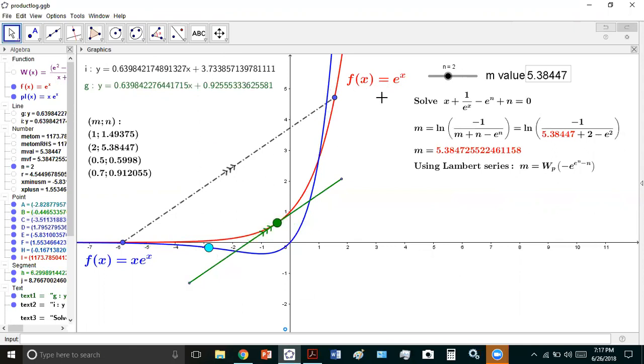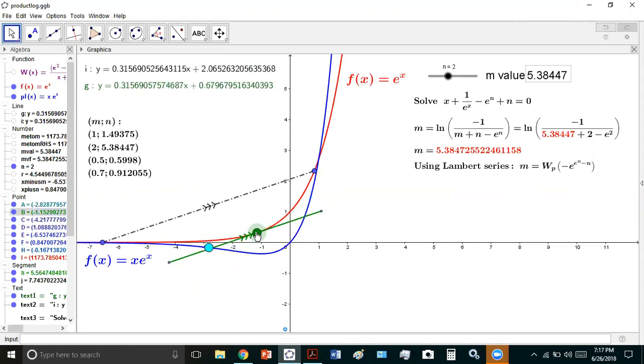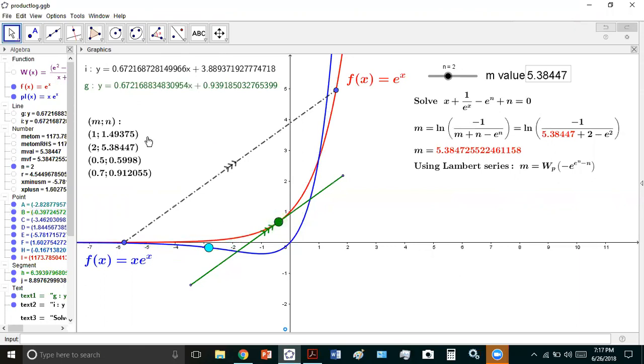And now in the case of this exponential function, it doesn't matter where the point of tangency is. You can have the same m and n pair, and it will be true regardless. This, of course, is a peculiarity for this function. It's not true for the majority of other functions.